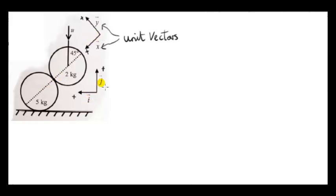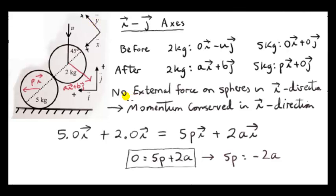We know that i and j are unit vectors of magnitude one pointing in the directions shown, and we're going to treat x and y as unit vectors also. So unit vector x is not to be confused with i — this x is a unit vector of magnitude one, and similarly for y. Now let's look at the forces on the two spheres — the internal forces. There's a force on the two kilogram sphere due to the five kilogram sphere along the line joining the centers, which is the line of impact.